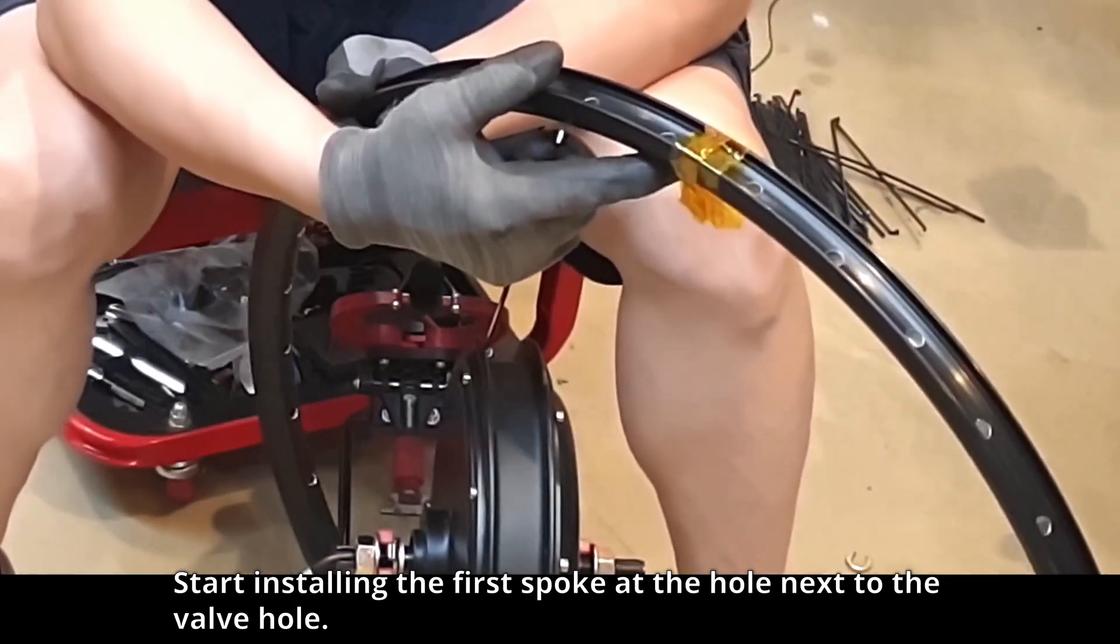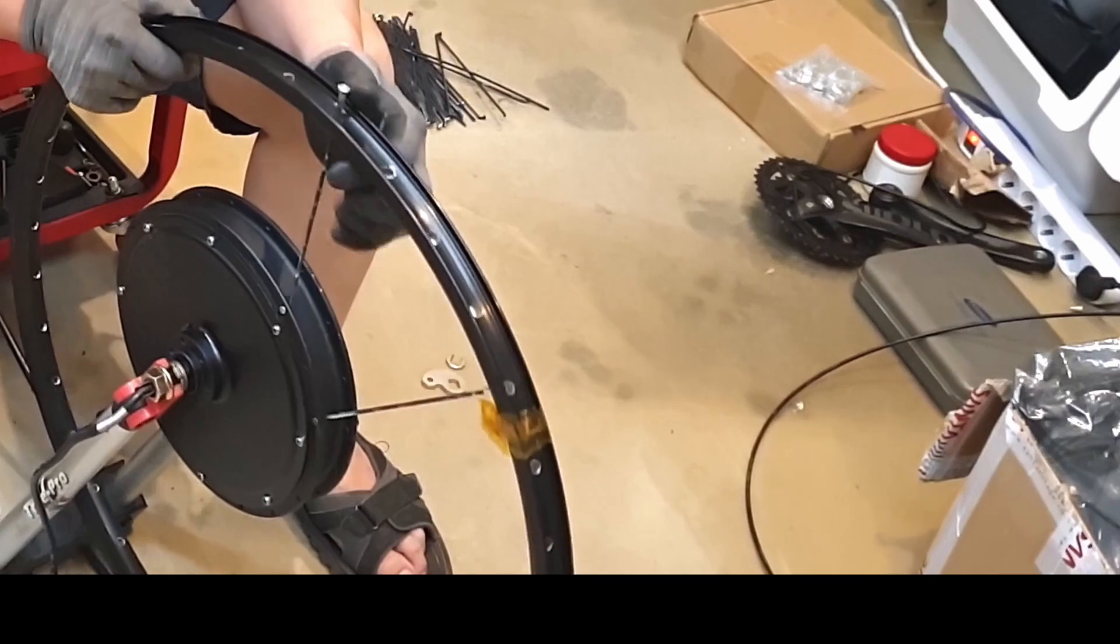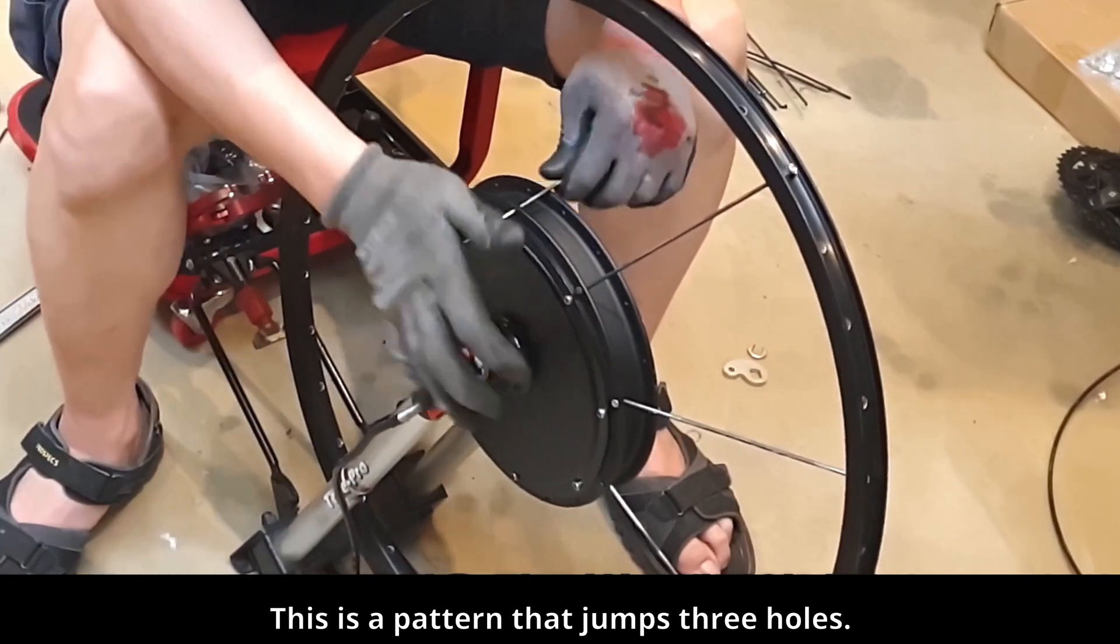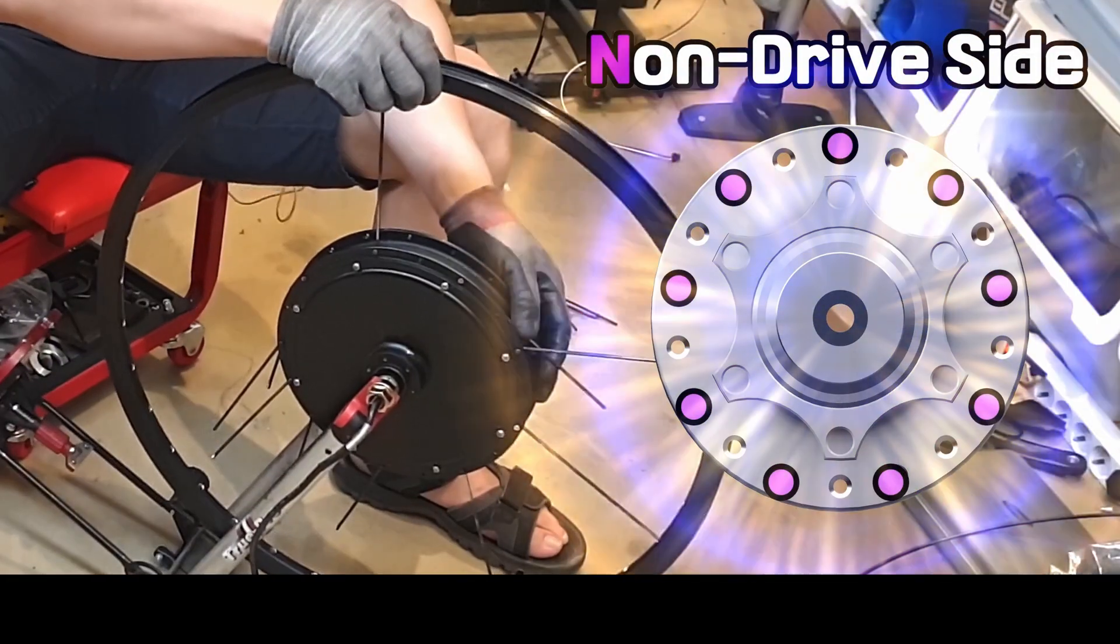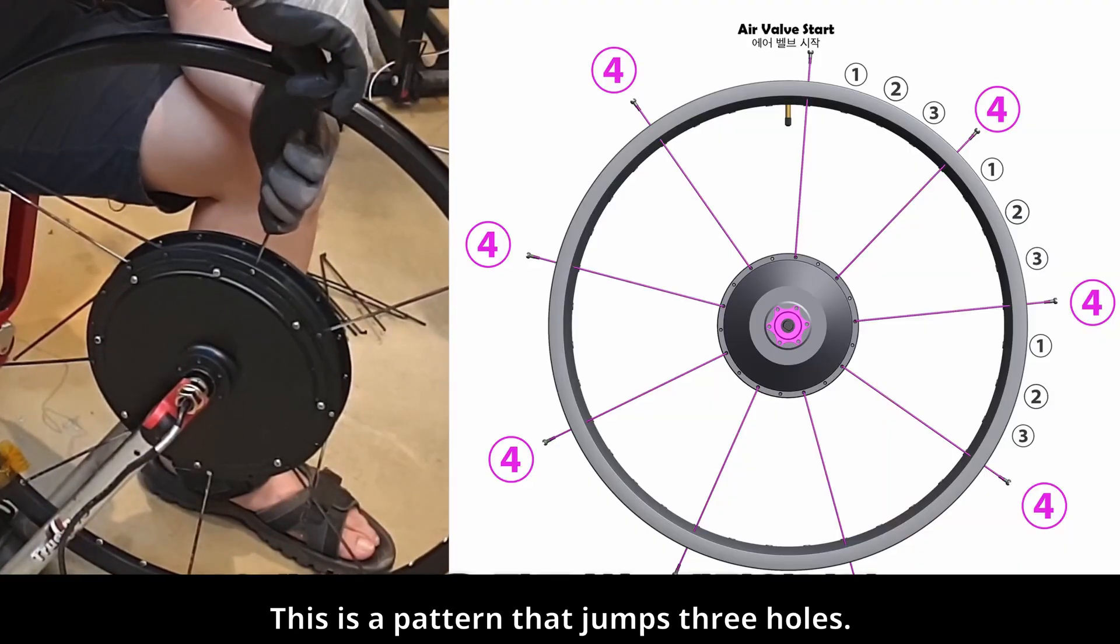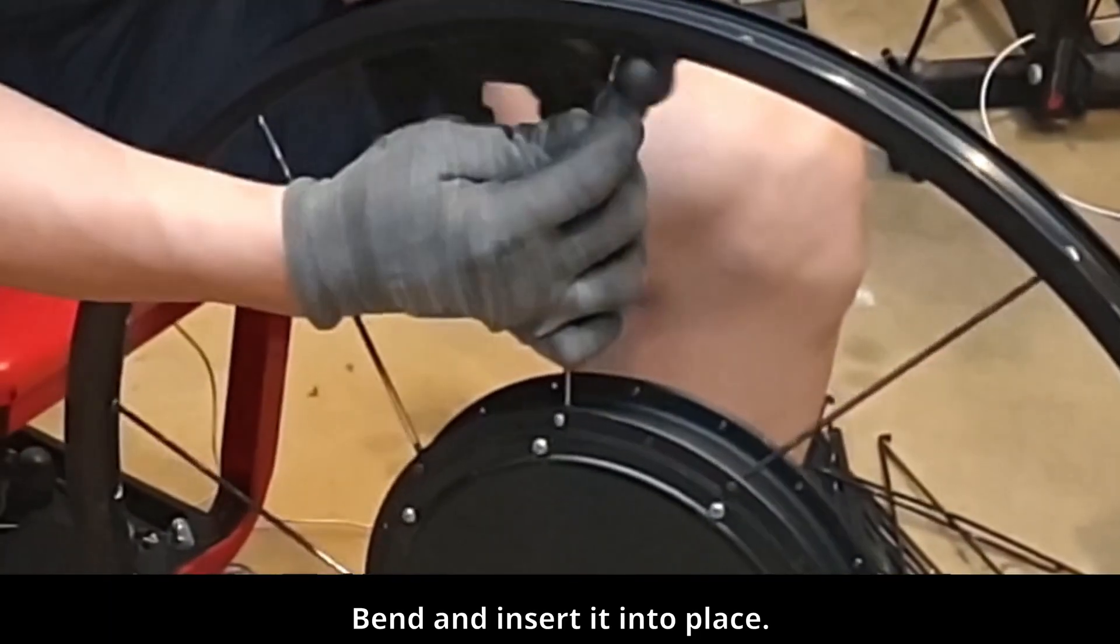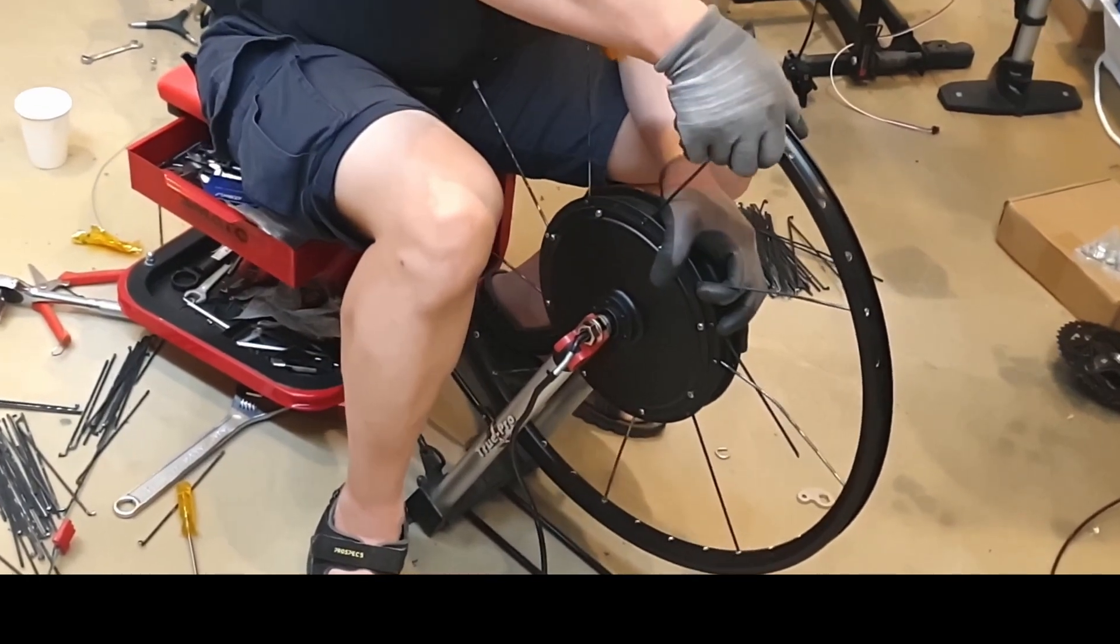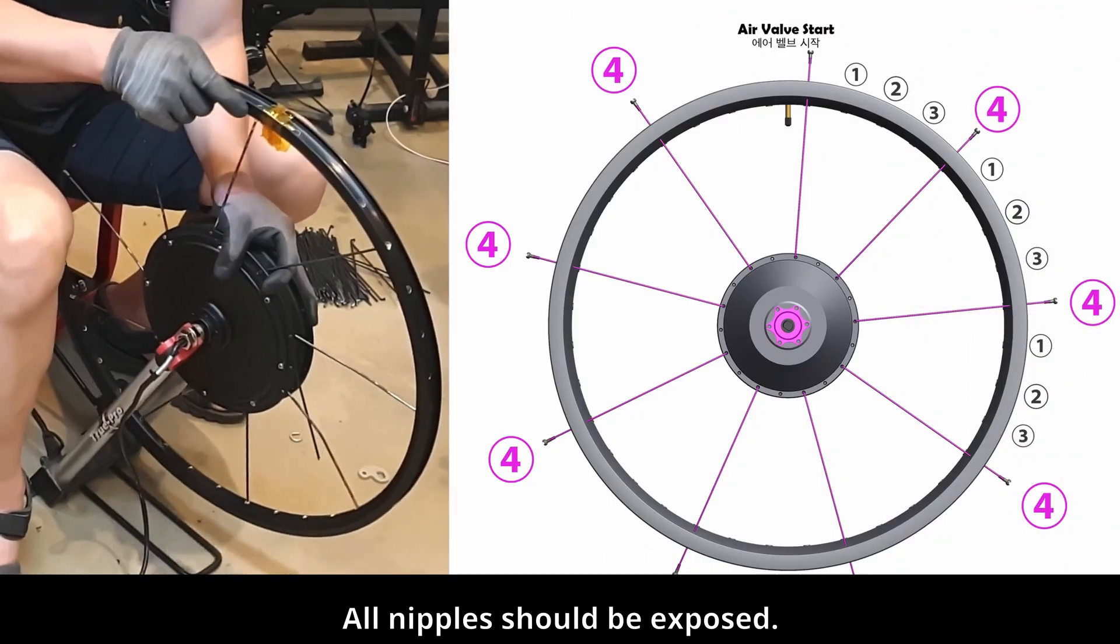Start installing the first spoke at the hole next to the valve hole. This is a pattern that jumps three holes. Bend and insert it into place. Perfect. First pattern is complete. All nipples should be exposed.